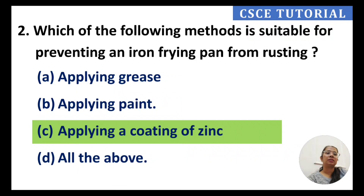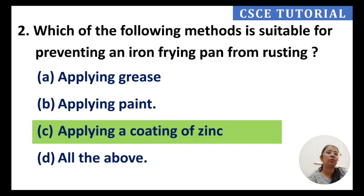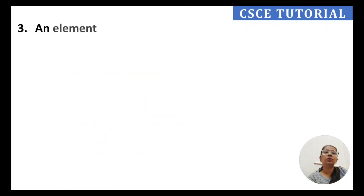The reason greasing or painting are not selected is that a frying pan is used on a gas flame. If greased, the grease will burn. Paint will also get damaged from continuous heating. But a zinc coating will effectively prevent the iron frying pan from rusting.